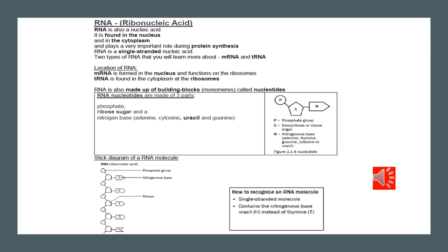RNA is also a nucleic acid, just like DNA, but there are differences. Its building blocks or monomers are also called nucleotides. Each nucleotide has three components: a nitrogenous base (four bases: adenine, guanine, cytosine and uracil), a sugar (in RNA the sugar is ribose), and a phosphate group. RNA is a single-stranded molecule; therefore no base pairing occurs.